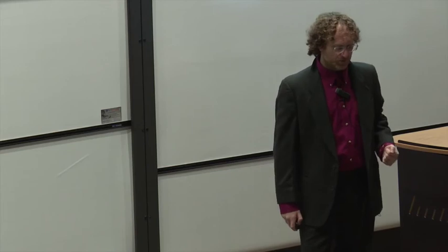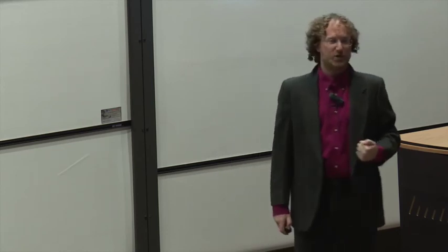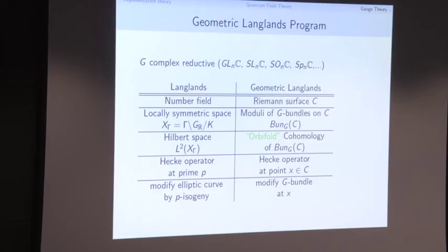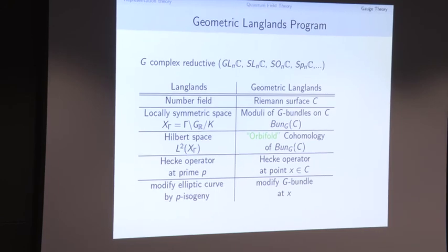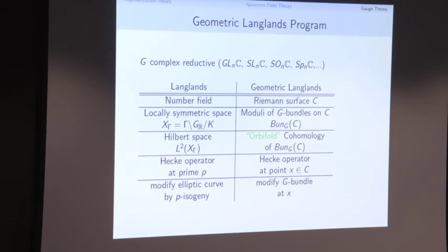If you come to my talk tomorrow, you will hear about some work with Sam Gunningham and David Nadler where we find new commutative symmetries following the principles of this talk in classical representation theory. But what I want to conclude with is what I think is the most exciting realization of this principle — the geometric Langlands program.